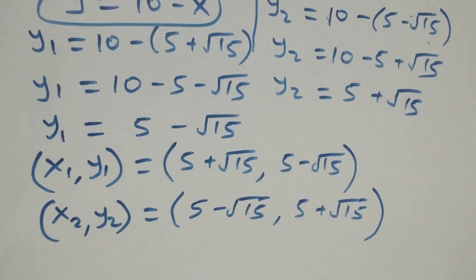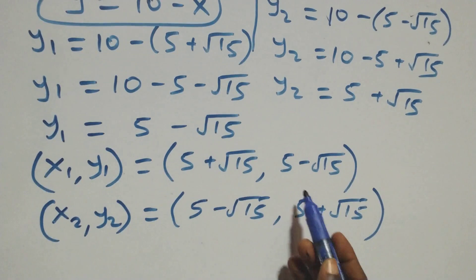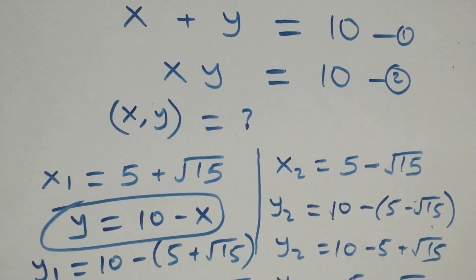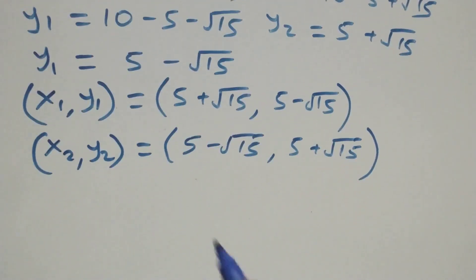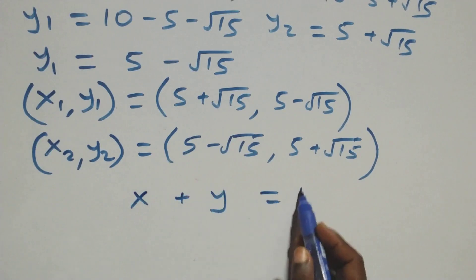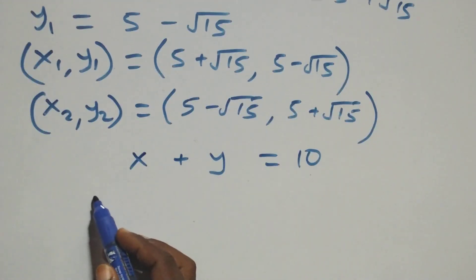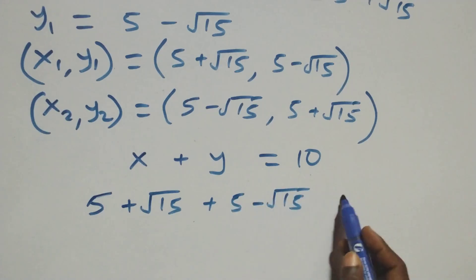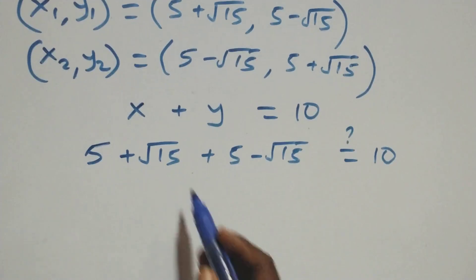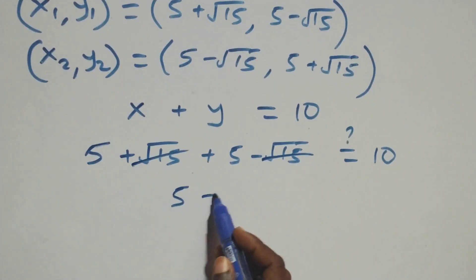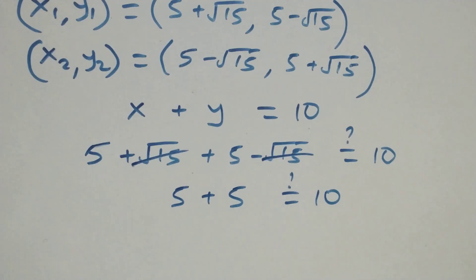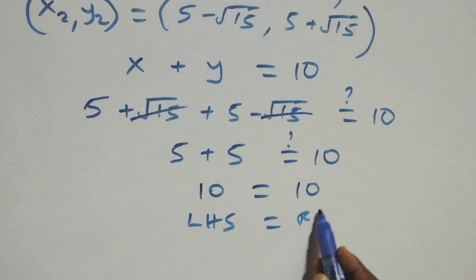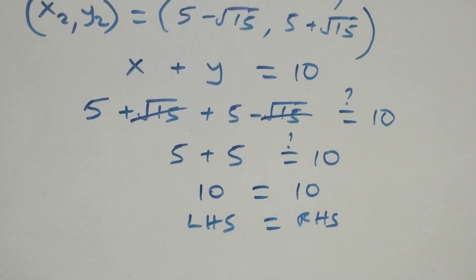We observe that the value of x in one solution equals the value of y in the other, and vice versa. To verify, we substitute into equation 1: x plus y equals 10. Using the first solution, (5 plus root 15) plus (5 minus root 15) equals 10. Root 15 and minus root 15 cancel, leaving 5 plus 5 equals 10, which equals 10. Left-hand side equals right-hand side, so these solutions satisfy equation 1.